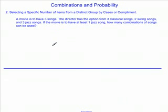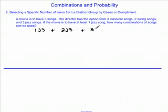If a movie is going to have 3 songs, and the director has the option from 3 classical songs, 2 swing songs, and 3 jazz songs, and the movie has to have at least 1 jazz song, how many combinations can be used? First, we're going to count this by cases. We know there has to be at least 1 jazz song. We can meet that requirement by having exactly 1 jazz song, exactly 2 jazz songs, or all 3 jazz songs. We can't have 0 jazz songs because we need at least 1. These are the 3 distinct cases.